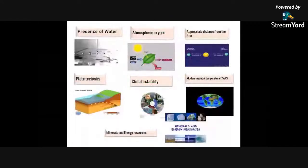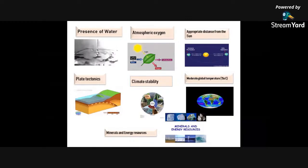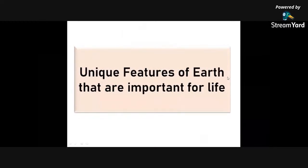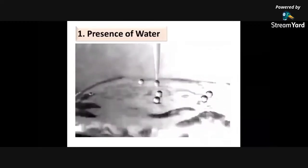Presence of water, atmospheric oxygen, appropriate distance from the Sun, plate tectonics, climate stability, moderate global temperature, minerals and energy resources. We're going to discuss each of the unique features of Earth that are important for life. First, the presence of water.